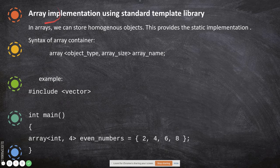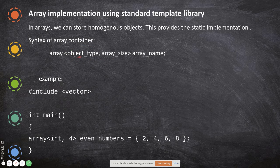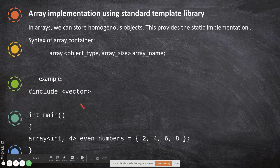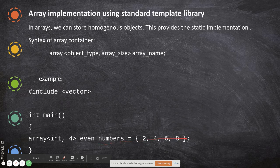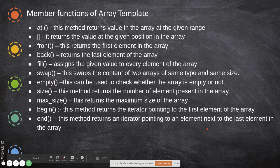Now we will see one basic container — array — and its implementation using the Standard Template Library. The general syntax is: the keyword 'array', followed by the object type (integer, string, etc.), then the size, and then the name of the array. For example: array<int, 4> even_numbers = {2, 4, 6, 8}. Here we declare an integer array of four elements initialized with even numbers.